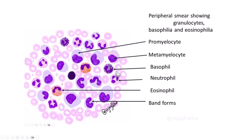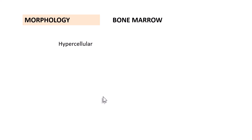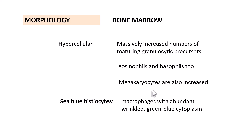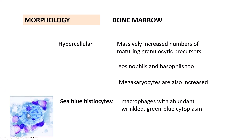On the peripheral smear illustration you can see granulocytes, basophilia, and eosinophilia — including promyelocytes, metamyelocytes, basophils, neutrophils, eosinophils, and band forms. In the bone marrow, it is hypercellular due to massively increased numbers of maturing granulocyte precursors, with increased eosinophils, basophils, and megakaryocytes. One important peculiar feature is the presence of sea-blue histiocytes — macrophages with abundant wrinkled green-blue cytoplasm — found in the bone marrow of CML.